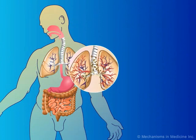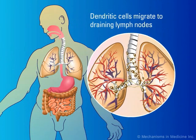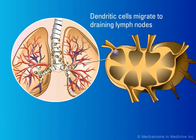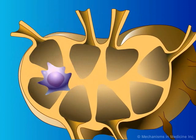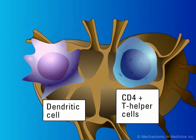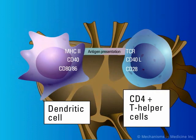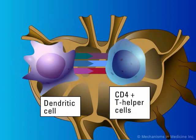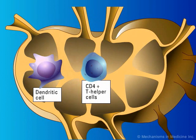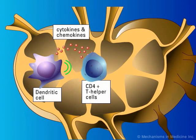Dendritic cells migrate to lymphoid tissues, including regional lymph nodes, to stimulate adaptive antifungal responses. Within lymphoid organs, dendritic cells activate adaptive responses.